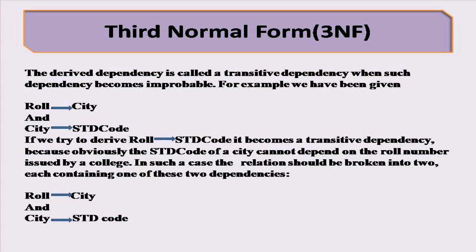This derived dependency is called transitive dependency, and such a dependency becomes problematic. For example, Role gives City and City gives STD code. If you try to derive Role gives STD code, it becomes a transitive dependency.